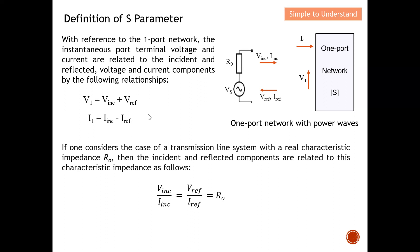If we consider the case of a transmission line system with a real characteristic impedance R0, then the incident and reflected components are related to this characteristic impedance. From V over I equals R, we can see that V of the incident wave over I of the incident wave gives the characteristic impedance R0, and similarly V of the reflected wave over I of the reflected wave also gives the characteristic impedance R0.